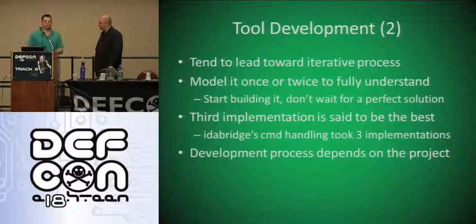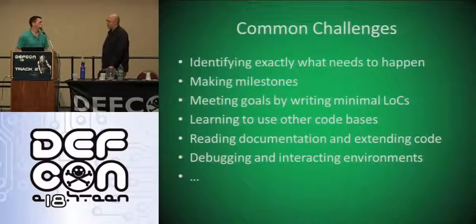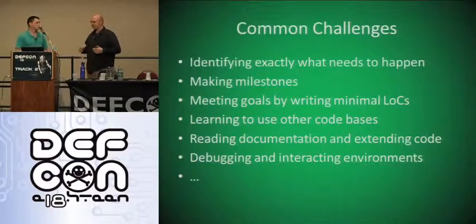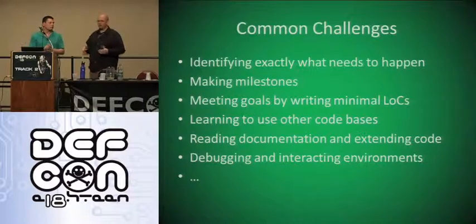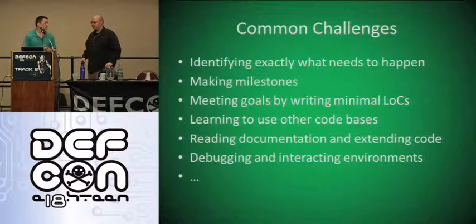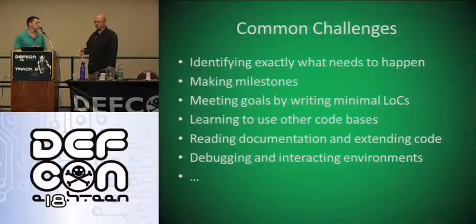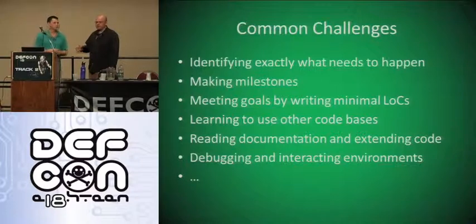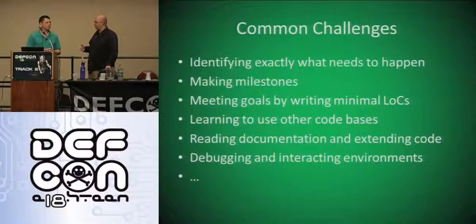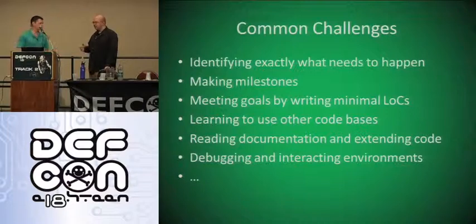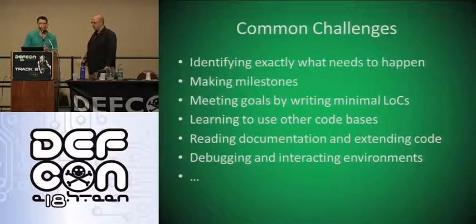Most of this development depends on the project, but there are common challenges. One of the first things you need to do is identify exactly what needs to happen. You need to make milestones — this seems a bit formal, but if you're working alone on a project and you've decided to write code instead of doing something manually, you need to set guidelines for when to call stop if the code isn't working. Milestones are key. For a personal project taking more time, you need milestones so progress stays on track.